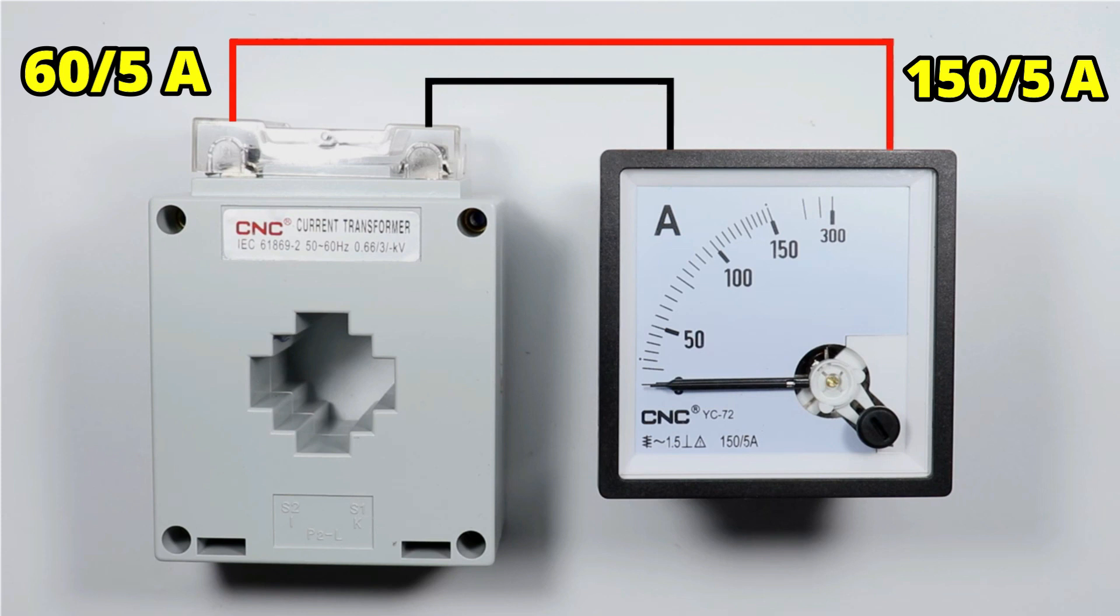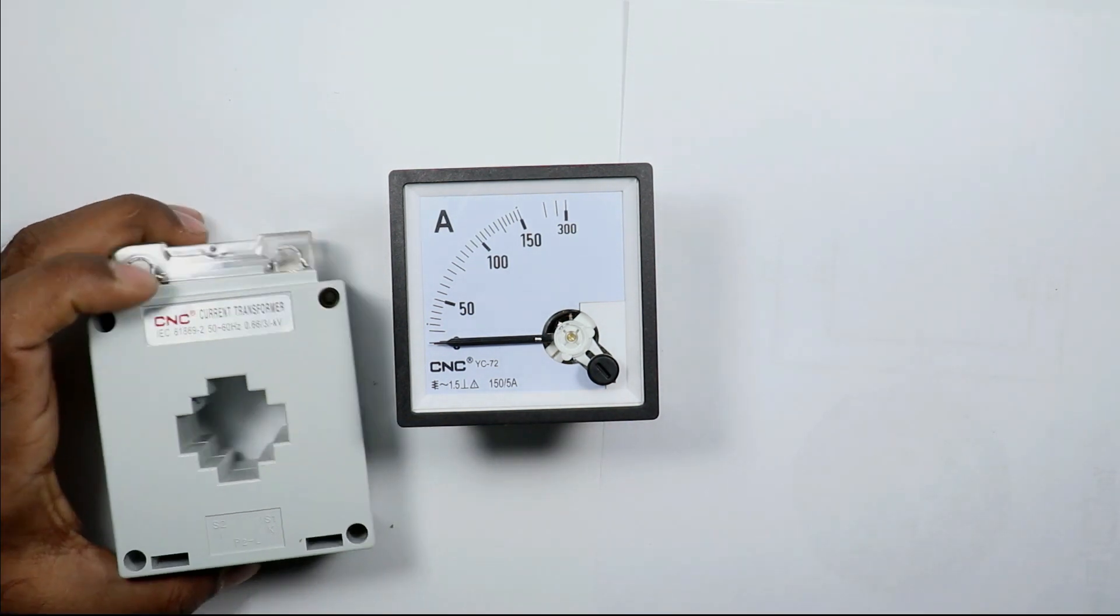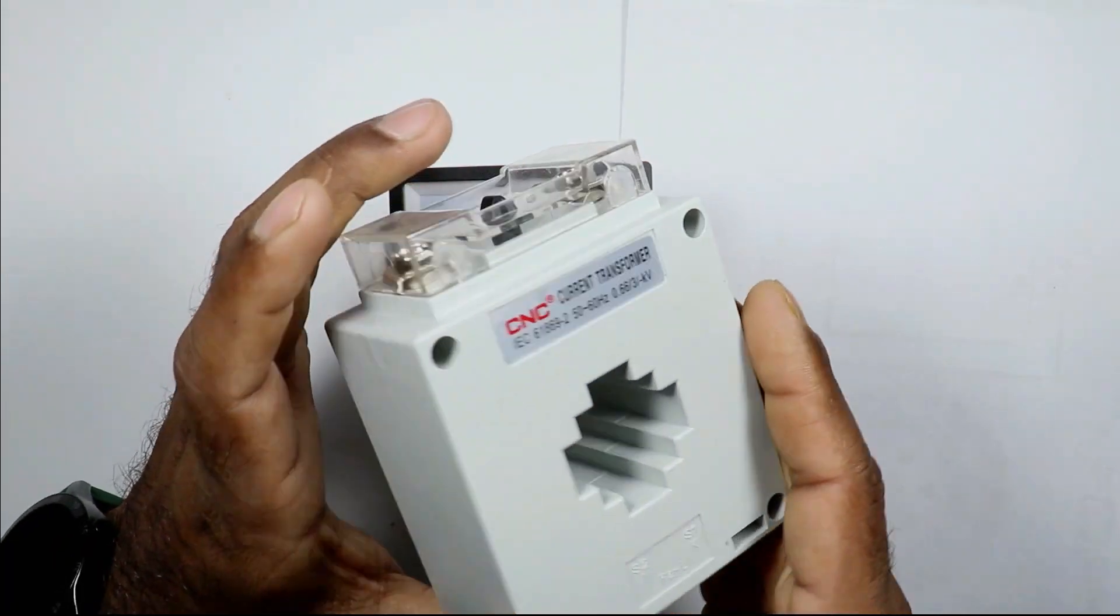If you want to learn this, watch the video till the last. Right now I have a CT and ammeter manufactured by CNC company. Let's take this CT and see where the ratio is written.